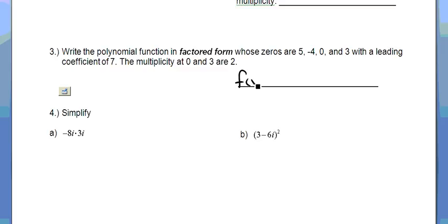So I'm going to write a polynomial function, f of x. The leading coefficient is 7, so my zeros are at x minus 5 for the zero at 5, x plus 4 for my zero at negative 4, and then x minus 3 for my zero at 3.